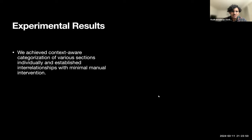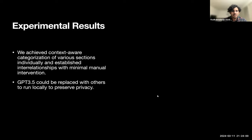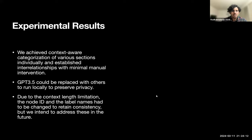We achieve context-aware categorization of various sections individually and established relationships with minimal manual intervention. We use GPT 3.5 in our analysis, but that could be substituted for any other models that could be run locally to preserve privacy. Due to the context-length limitation, the node ID and the label names had to be changed to retain consistency, but we intend to address this in the future.